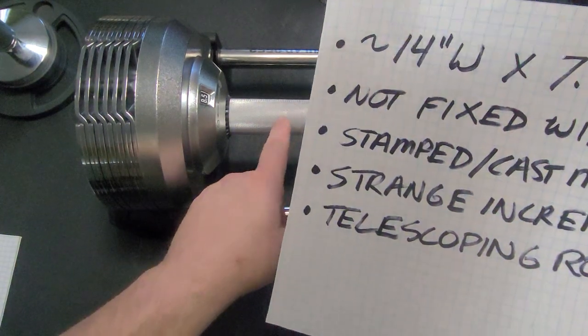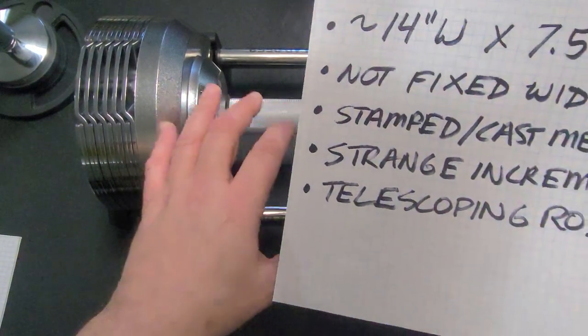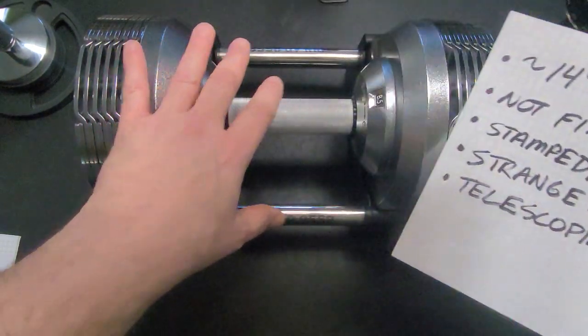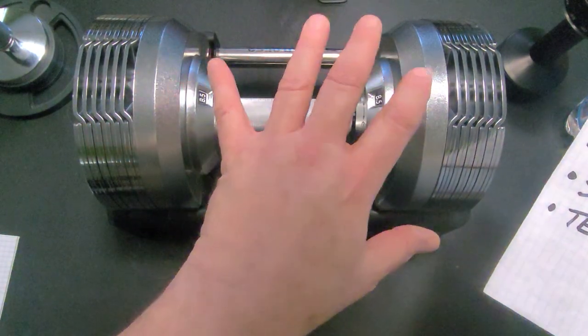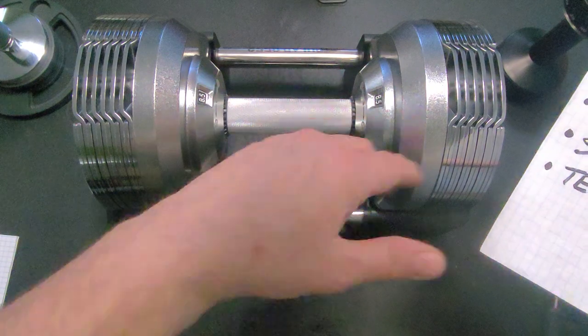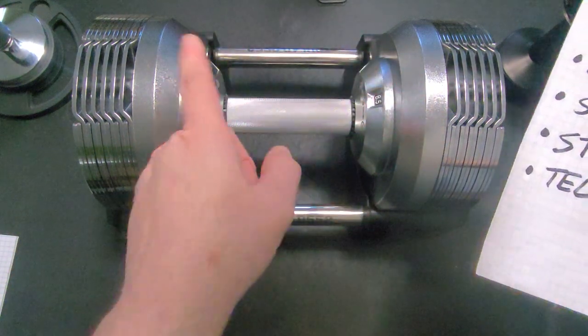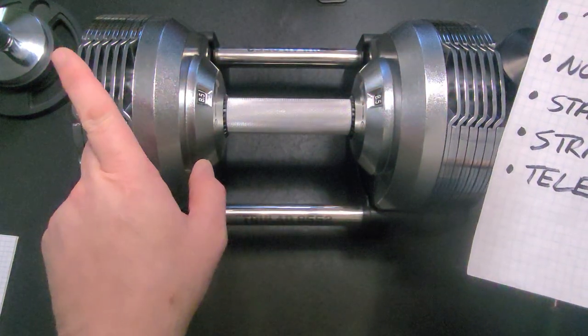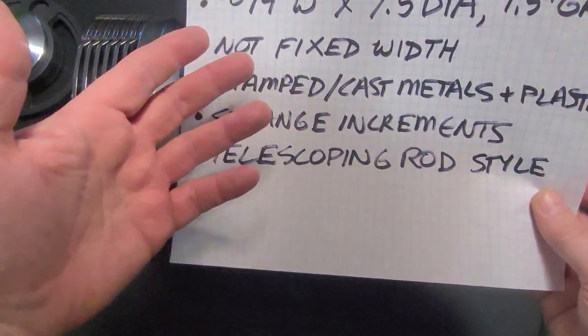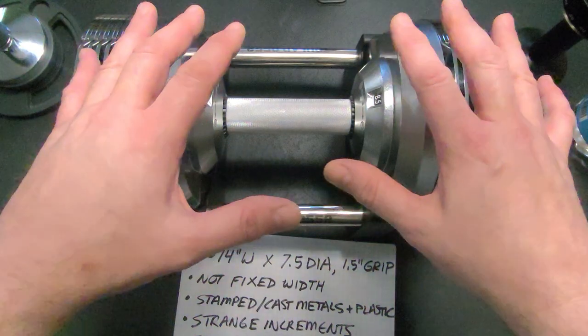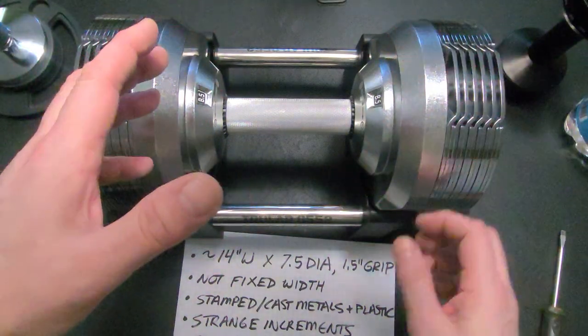But this is like a sleeve. This is not a solid grip, it's a tube. And then inside there are some plastic components. And I'll get into why I don't think that it's an issue with this dumbbell that there are some plastic components inside for the same reasons that I don't think it's an issue with Snode. And the one thing that I found that I really don't like about it, and it's minor, is the strange incrementing.